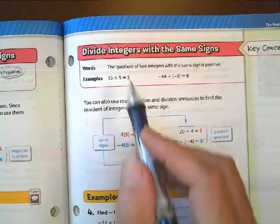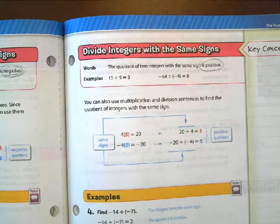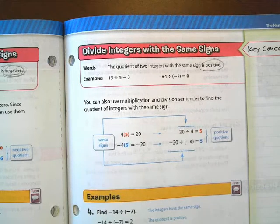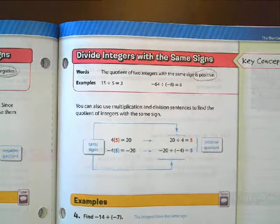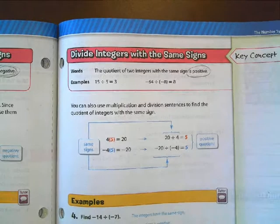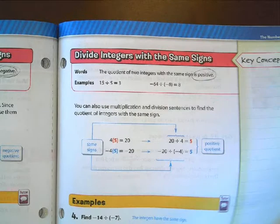If we're dividing integers with the same sign, then the solution is going to be positive. So just like multiplication, if they're different you get negative. If they're the same, we get positive.